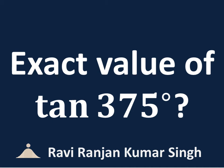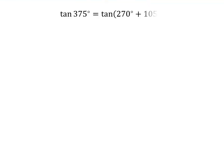In this video, we will learn to find the exact value of tangent of 375 degrees. 375 degrees is equal to 270 degrees plus 105 degrees, so tangent of 375 degrees is equal to tangent of 270 degrees plus 105 degrees.